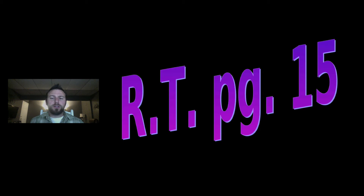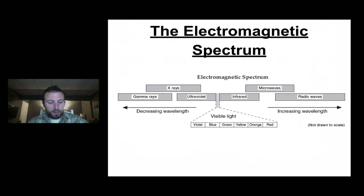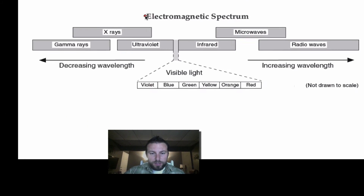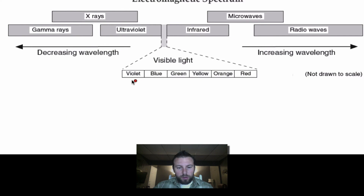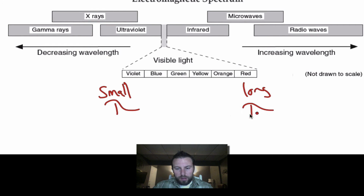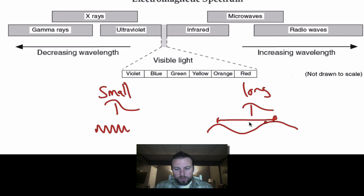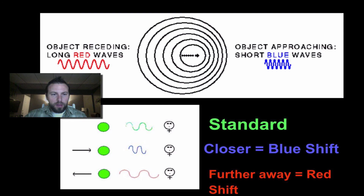We turn to page 15 in our science reference table and we see the visible light spectrum going from violet to red. Violet has a small wavelength and red has a long wavelength. A short wavelength would look like tightly packed waves, while a long wavelength would be more spread out, measured from crest to crest. The longer wavelength is important for understanding red shift.